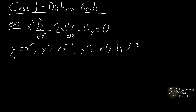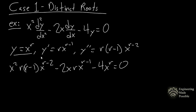So we assume y equals x to the r, get the first and second derivatives, and plug them into the differential equation. Substituting gives: x squared times r(r minus 1) times x to the (r minus 2), minus 2x times r times x to the (r minus 1), minus 4 times x to the r, equals zero.